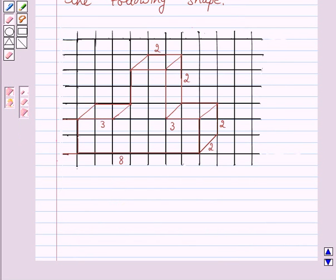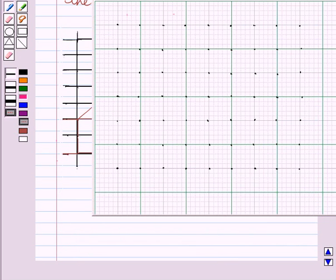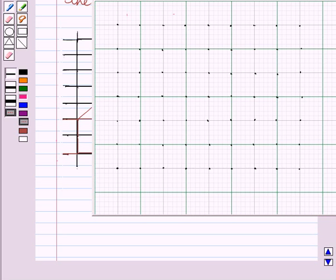So, keeping this in mind, let's start the solution. This is an isometric dot paper. With the help of given oblique sketch, we will draw its isometric sketch.